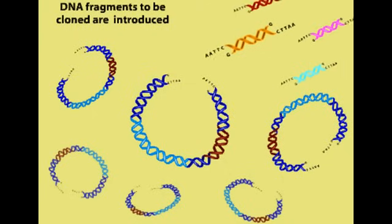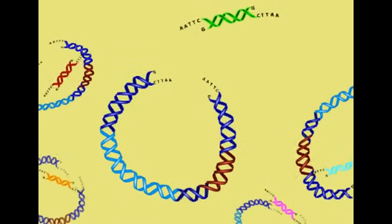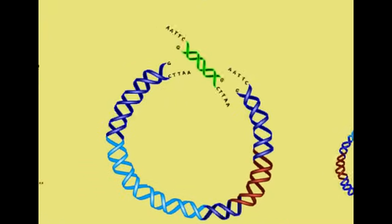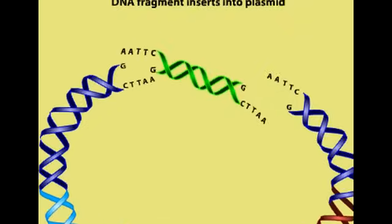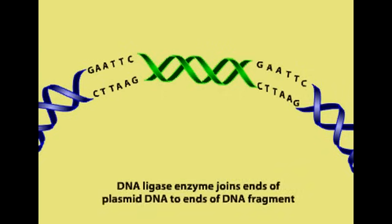Foreign DNA containing the sequence we wish to clone is digested with ECO-R1 and then mixed with the cleaved vector. The sticky ends of the foreign and plasmid DNA molecules hybridize and then are sealed into phosphodiester linkages by the enzyme DNA ligase, creating a recombinant plasmid.